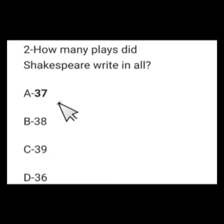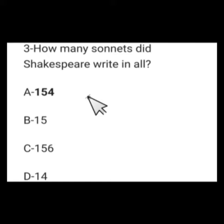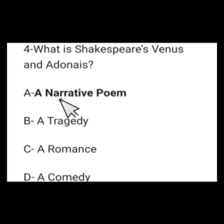Number 3: How many sonnets did Shakespeare write in all? The number of sonnets written by Shakespeare is 154, with other options being 115, 156, or 14. Number 4: What is Shakespeare's Venus and Adonis? Options: a narrative poem, a tragedy, a romance, or a comedy. Shakespeare's Venus and Adonis is a narrative poem — option A is the right option.